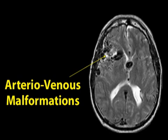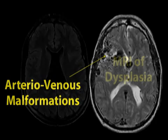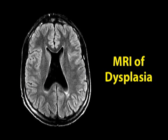The malformation itself does not generate seizures, but the irritated brain cells nearby may. This is a congenital abnormality in the brain called a dysplasia, or a birthmark in the brain. A dysplasia is made up of normal cells in an abnormal location. Dysplasias don't grow, but they are a common cause of epilepsy.